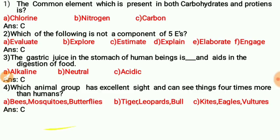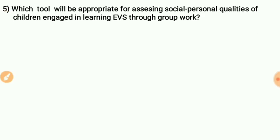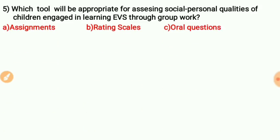Question five: Which tool will be appropriate for assessing social and personal qualities of children engaged in learning EVS through group work? The answer is the use of a rating scale — through rating scale we can assess the social and personal qualities of children.